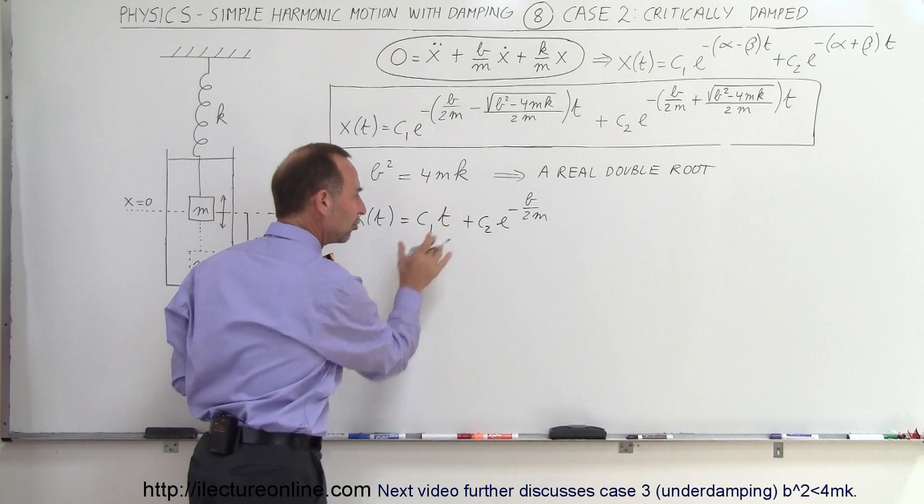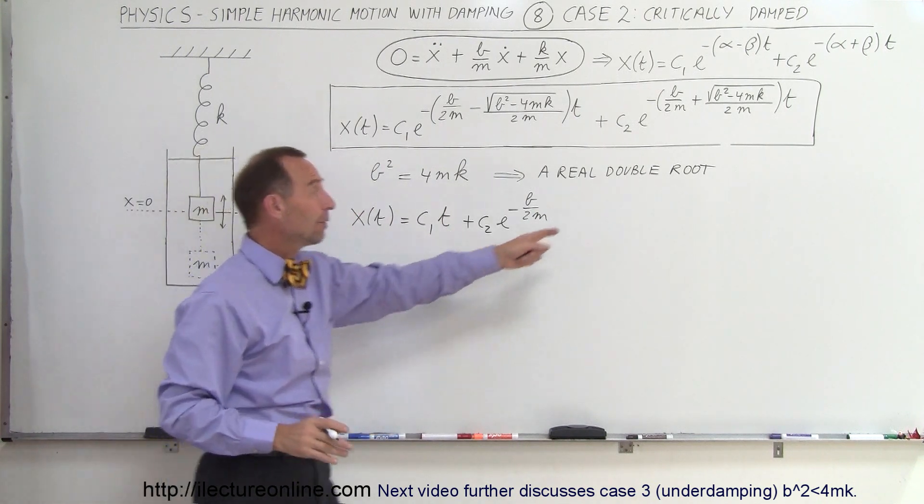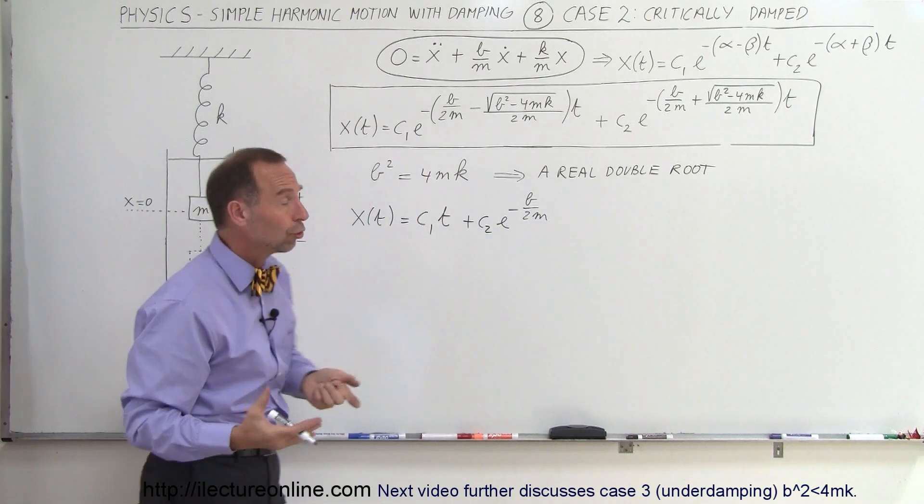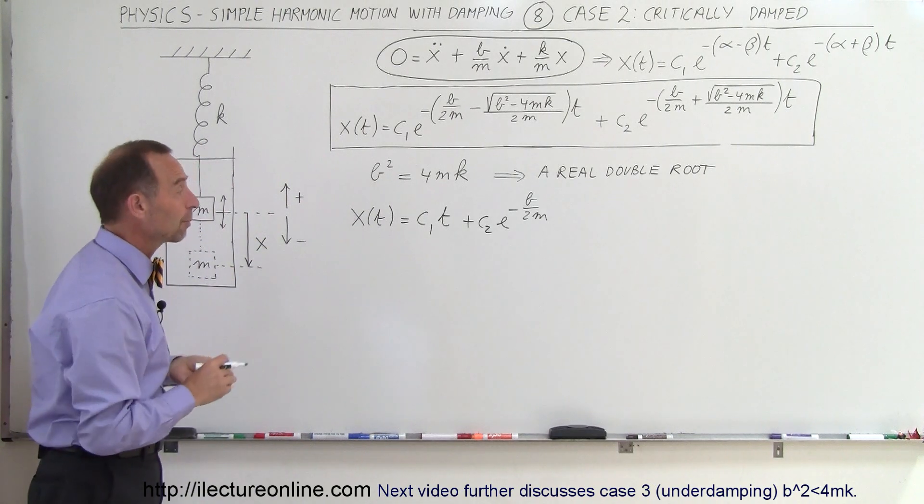So that looks a little bit different. This term here simply comes from the fact that we have a double root and to find the solution to double root, we have to use the concept of partial fractions.